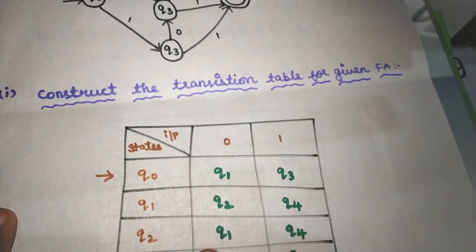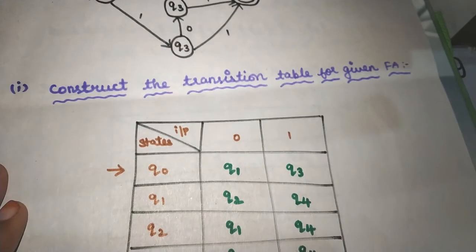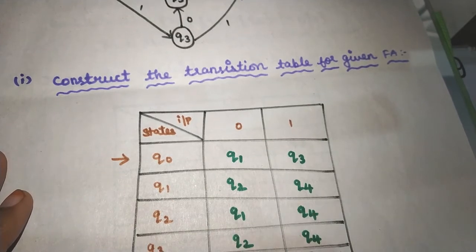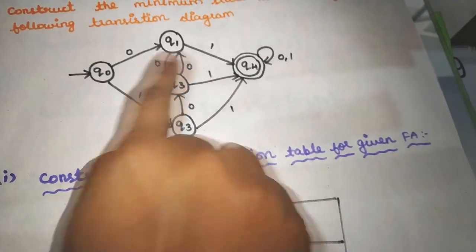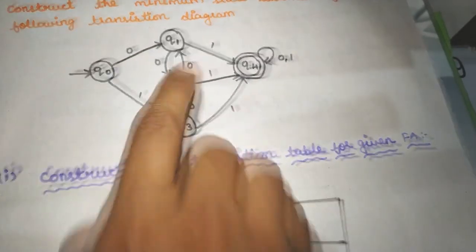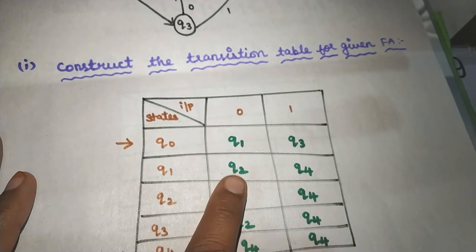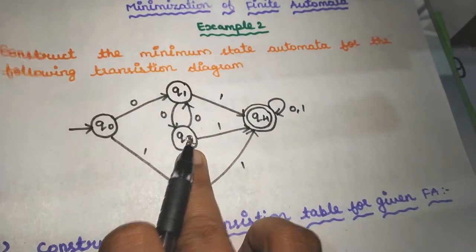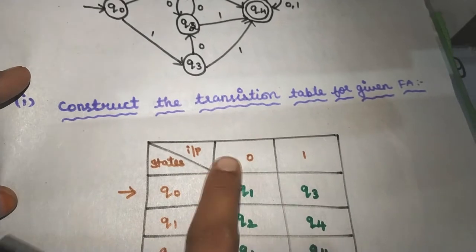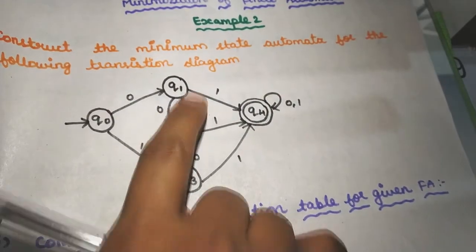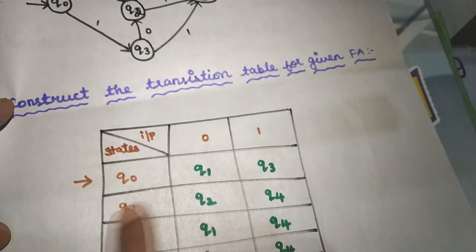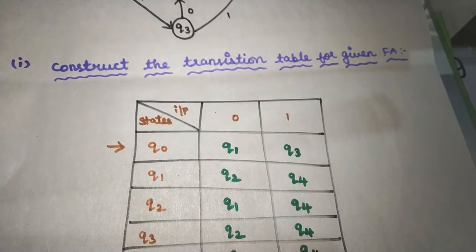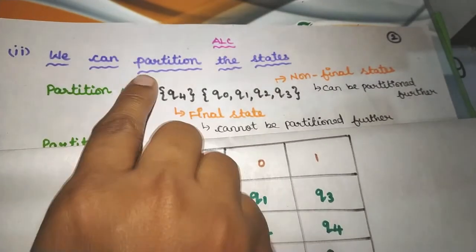When you reach state 1, in the rest of the states you can see transitions in each state. Not all states go to Q1 — it will be Q3, Q1, Q2. Now we can partition the states — that is what I told you, there are two sets.